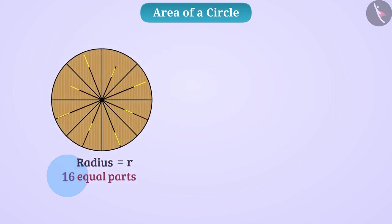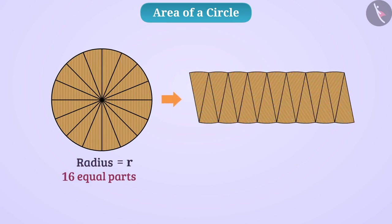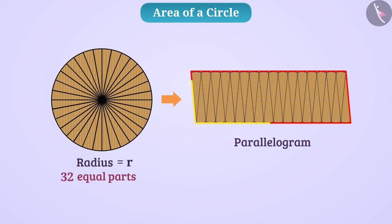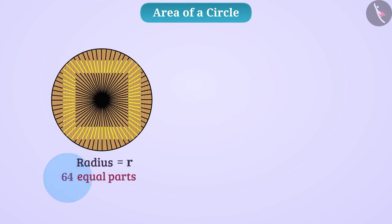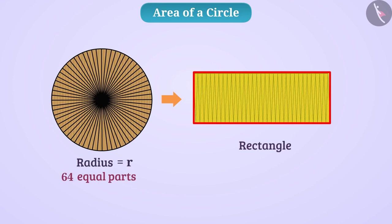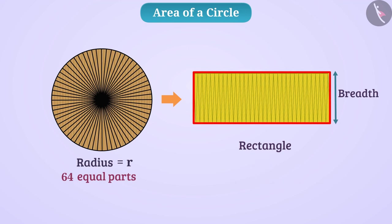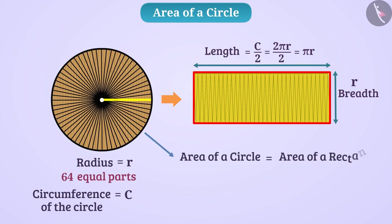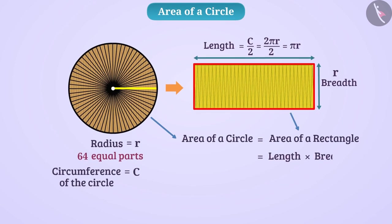If we divide the circle into 16 equal parts and arrange them, then we will be able to form the parallelogram more properly. The more equal parts we use, the more appropriate the parallelogram becomes. If we divide the circle into several equal parts and arrange them, we will get a rectangle — remember that a rectangle is also a parallelogram. The breadth of this rectangle will be equal to the radius R of the circle, and the length will be half the circumference, i.e. πR.